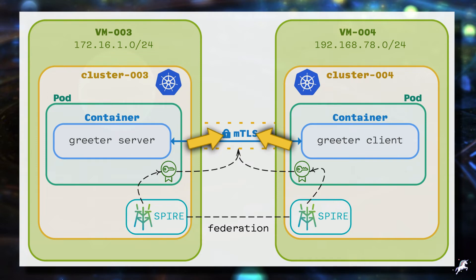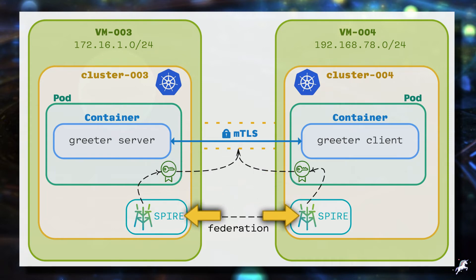To establish an MTLS connection, these applications will exchange their X.509 digital certificates, and those certificates will be distributed and validated by Spire. So the workload greeter client in cluster four will verify the validity and authenticity of the workload greeter server in cluster three, and vice versa, and they will establish secure communication between each other.